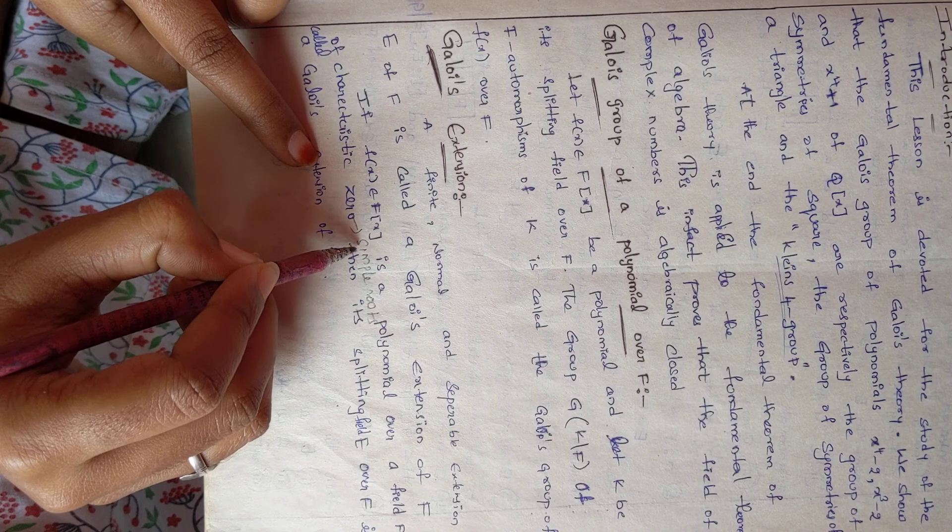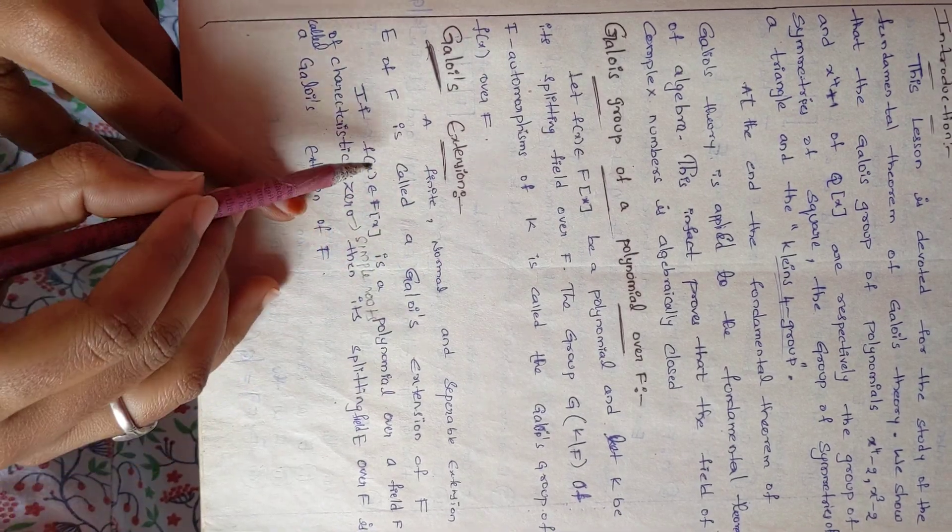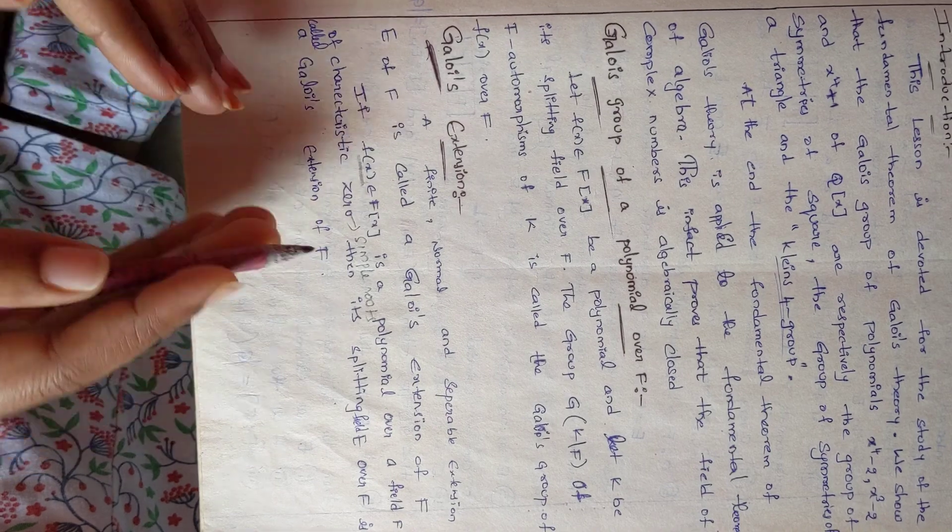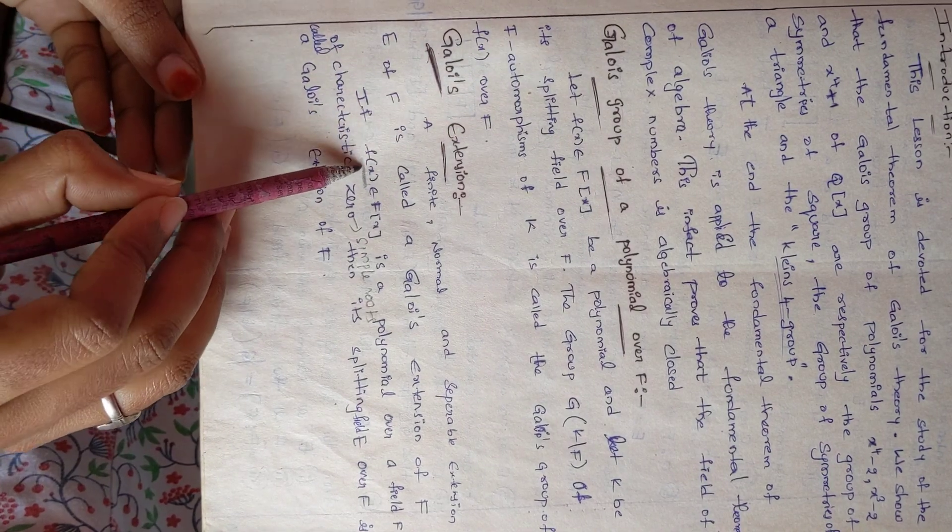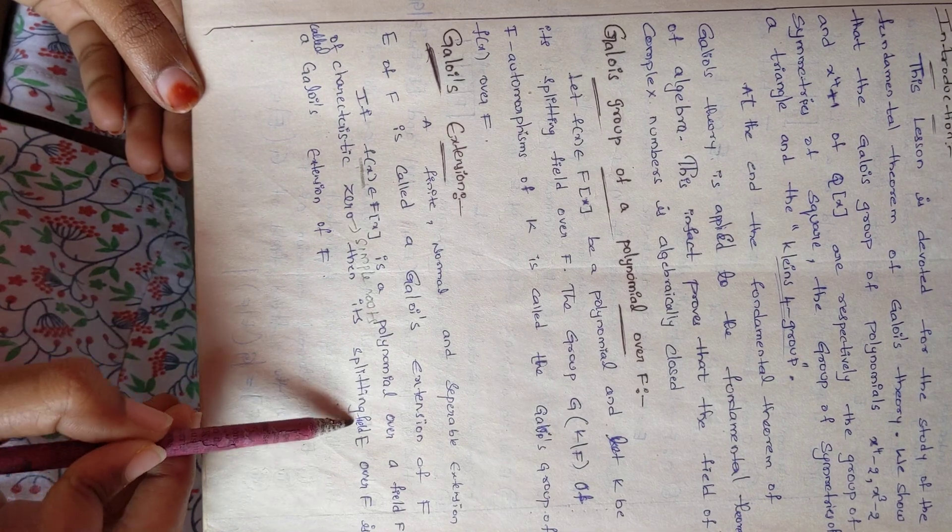Simple root means every root is a different root. That means every root exists. So it is a splitting field E over F.